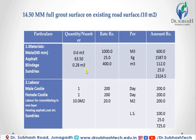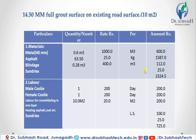For blindage, per meter cube rate is 400 rupees; 0.28 multiplied by 400 equals 112 rupees. Sundries cost is 25 rupees. Total material cost is 2,324.5 rupees. For labor: male coolie — 1 required at 200 rupees per day = 200 rupees. Female coolie — 200 multiplied by 1 = 200 rupees.